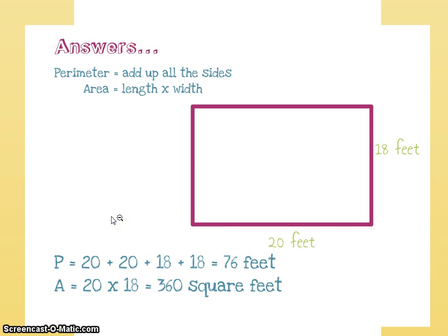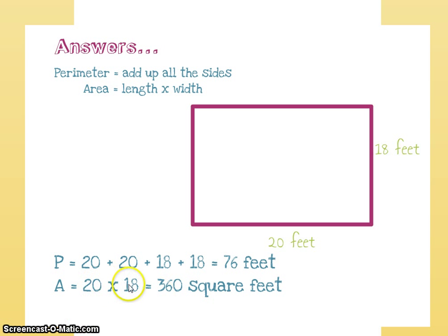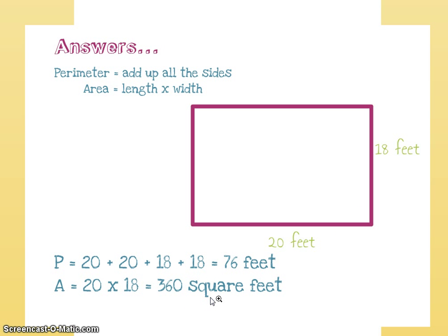For area — how much sod would he need to buy and roll out? Here's 20 feet for the length and 18 feet for the width. So 20 times 18, length times width, equals 360 square feet. In order to fill in this whole area, he will need 360 square feet of sod. Hopefully this helps to clear up the difference between area and perimeter, and we're going to do some practice problems in just a second.